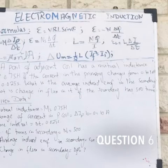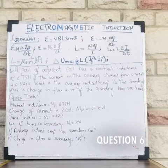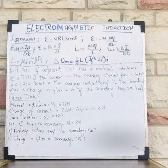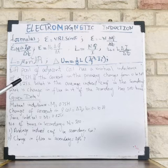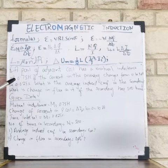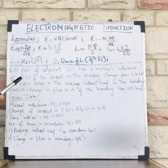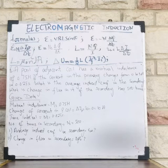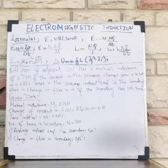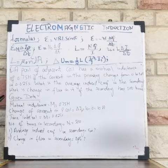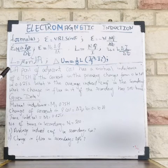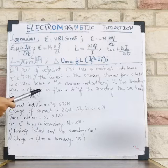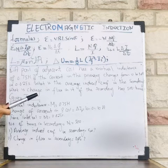The last problem was quite short and easy, while this problem is lengthy but also easy. Let's start. A pair of coupled coils has a mutual inductance of 0.75 henry. If the current in the primary changes from 0 to 10 amperes in 0.025 seconds, what is the average induced EMF in the secondary? Furthermore, what is the change in flux if the secondary has 500 turns?